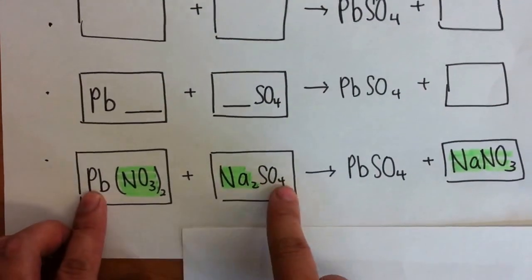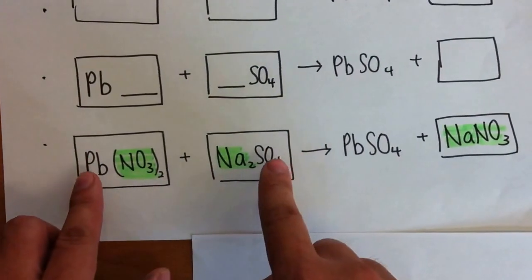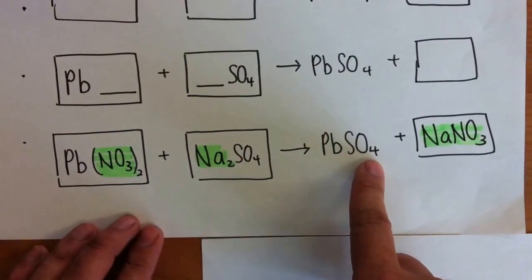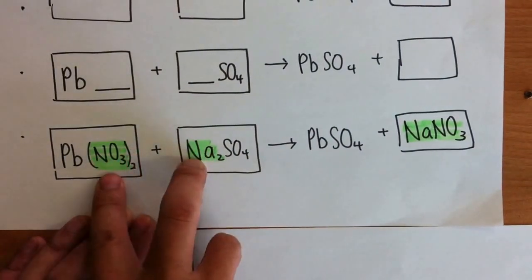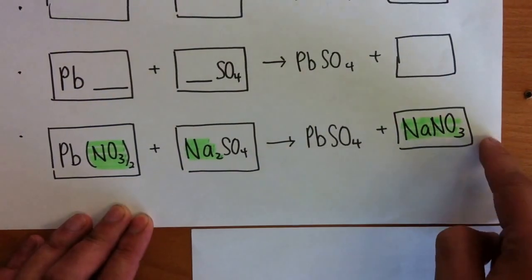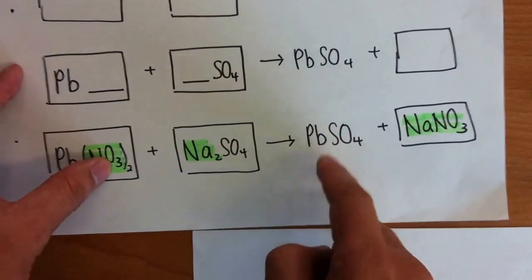When Pb and SO4 come together in the solution, what happens is Pb and SO4 will permanently join together to form an insoluble solid, leaving Na and NO3. This will remain a solid, it's an aqueous solution, and you will get Na and NO3. So this will be soluble, this will be insoluble.